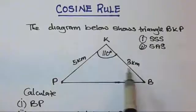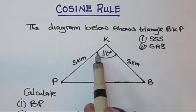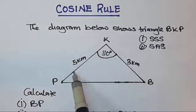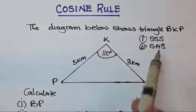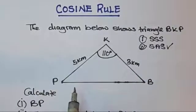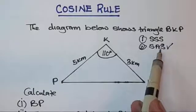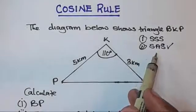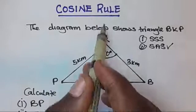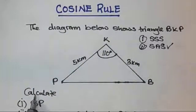When we look at this problem, we have been given a side, a side, then an angle, and another side — so we have a SAS situation. This means we are allowed to use the cosine rule. The question is asking us to calculate BP.